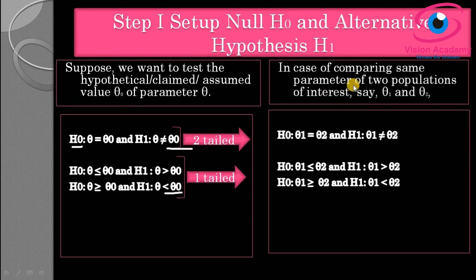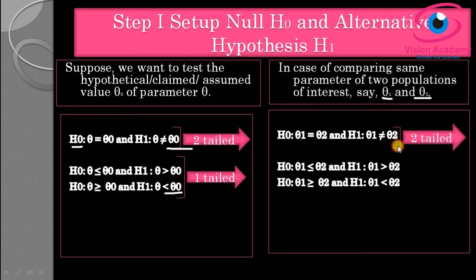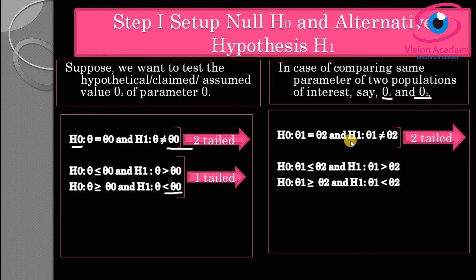When comparing the same parameter across two populations, say theta-1 and theta-2, the null hypothesis is theta-1 equals theta-2, and the alternative hypothesis is theta-1 not equal to theta-2 — this is a two-tail test. Other possibilities are: null hypothesis theta-1 less than or equal to theta-2, alternative hypothesis theta-1 greater than theta-2; or null hypothesis theta-1 greater than or equal to theta-2, alternative hypothesis theta-1 less than theta-2 — both are one-tail tests. In any form, these six combinations of null and alternative hypotheses apply.